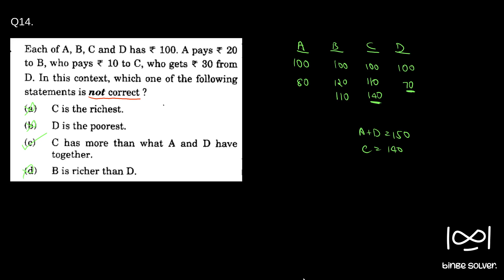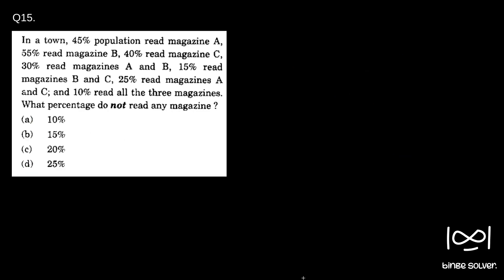Next question, question 15. In a town, 45% of the population read magazine A, 55% read magazine B, 40% read magazine C, 30% read magazines A and B, 15% read magazines B and C, 25% read magazines A and C, and 10% read all three magazines. What percentage do not read any magazine?